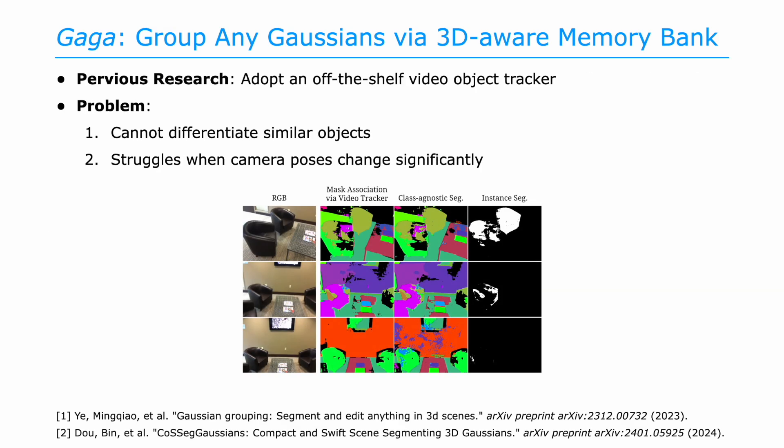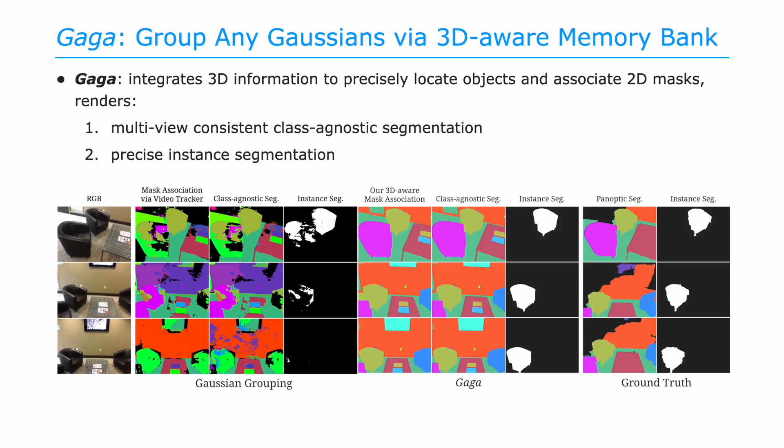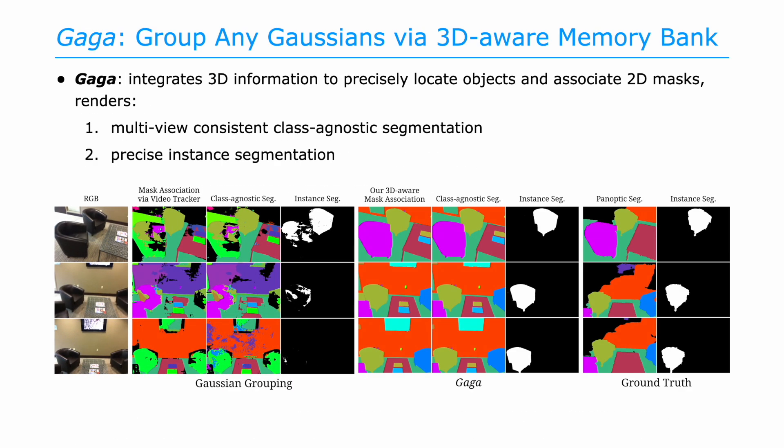Previous research attempts to treat multi-view image datasets as video sequences and rely on an off-the-shelf video object tracking method to build mask association. However, these methods cannot differentiate similar objects, like the leather sofas in the images, and they struggle when camera poses change significantly. In contrast, GAGA integrates 3D information to precisely locate objects and associate 2D masks, leading to multi-view consistent class-agnostic segmentation and precise instance segmentation rendering.